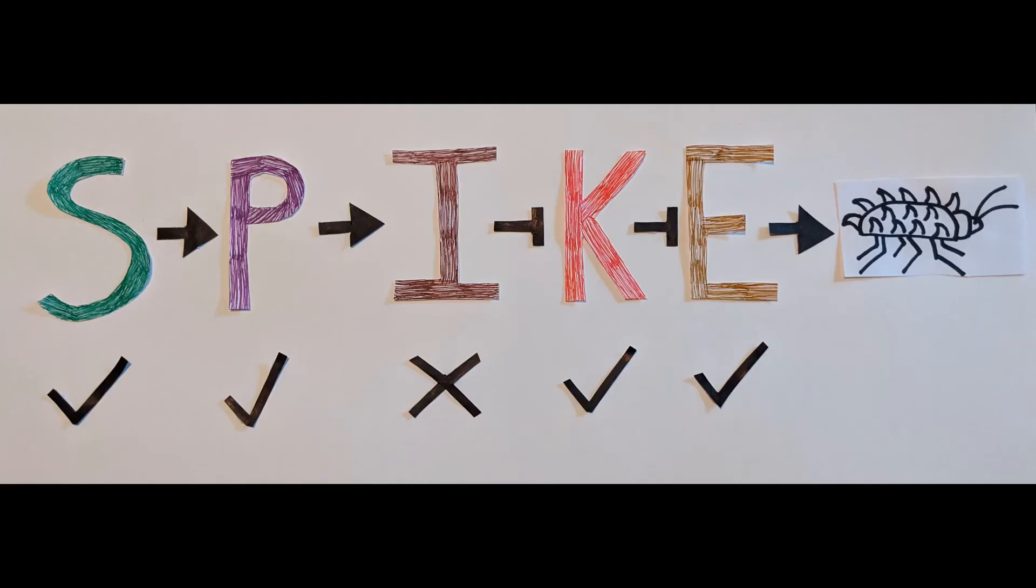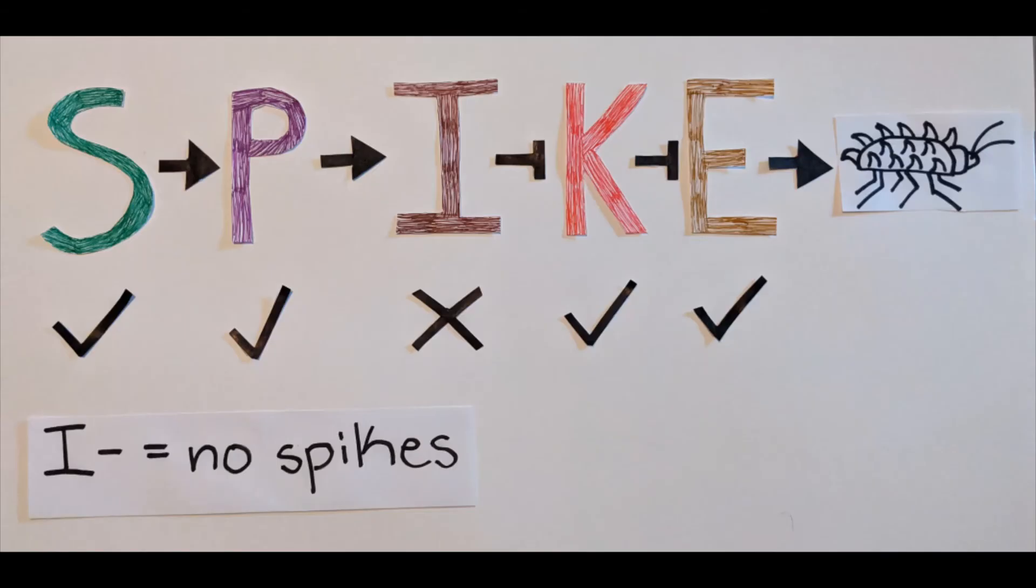For the second mutation, the I gene is removed. In this case, S can still activate P, but the P gene can no longer activate I. If the I gene is not activated, K cannot be inhibited, meaning E cannot produce spikes. So when the I gene is removed, the cells do not produce spikes.